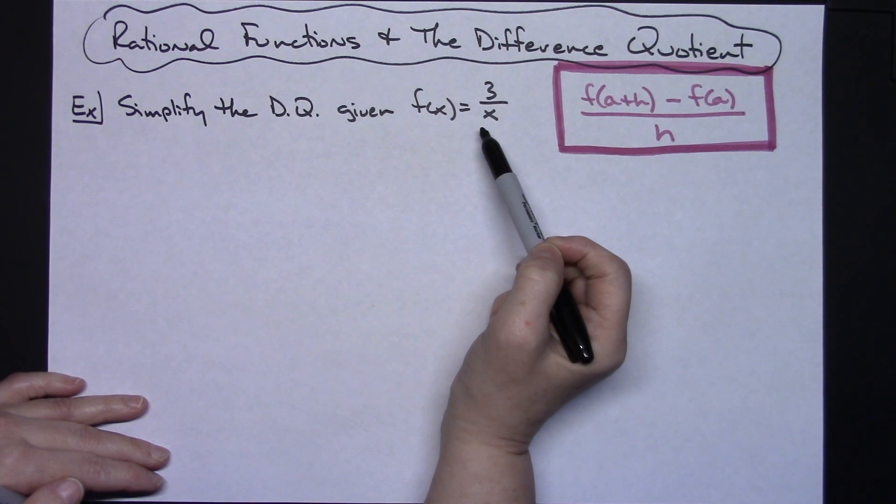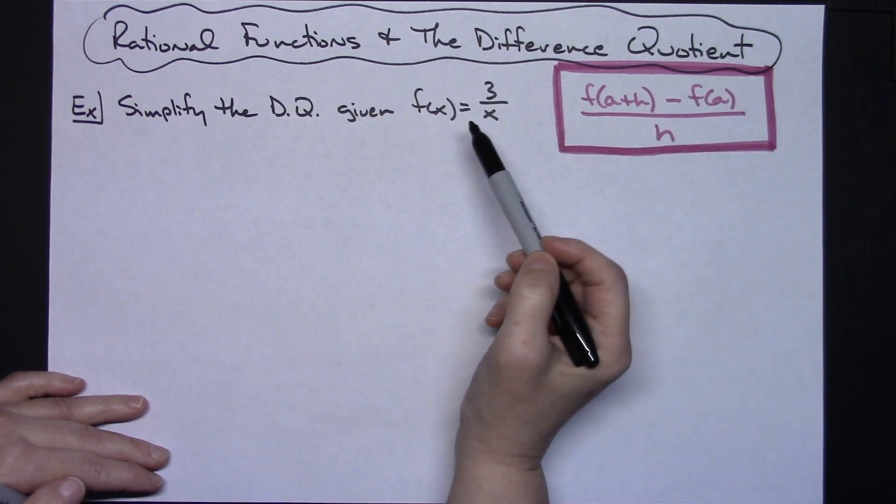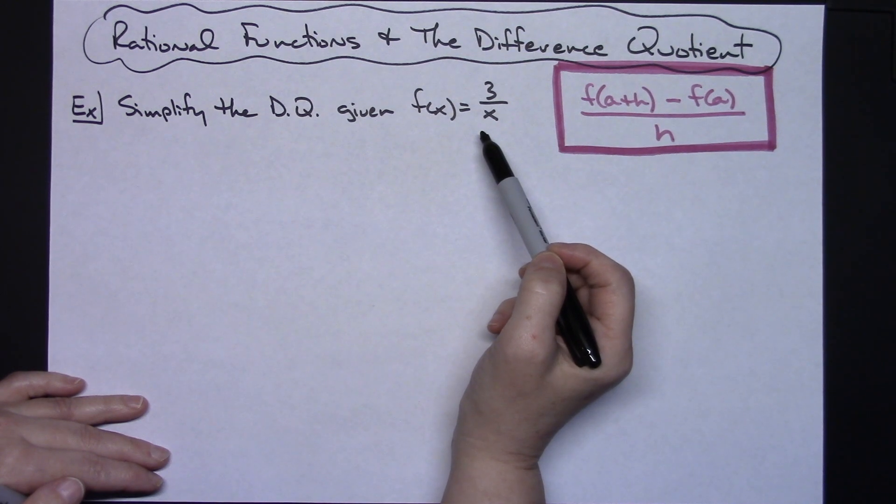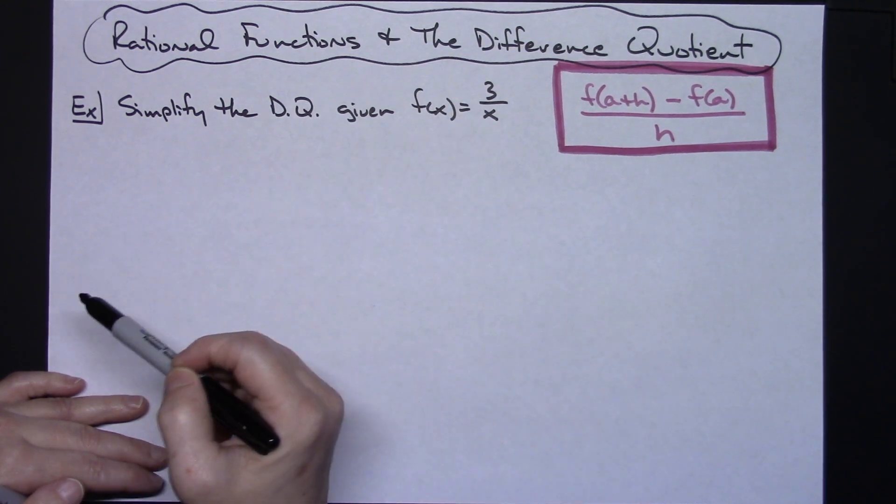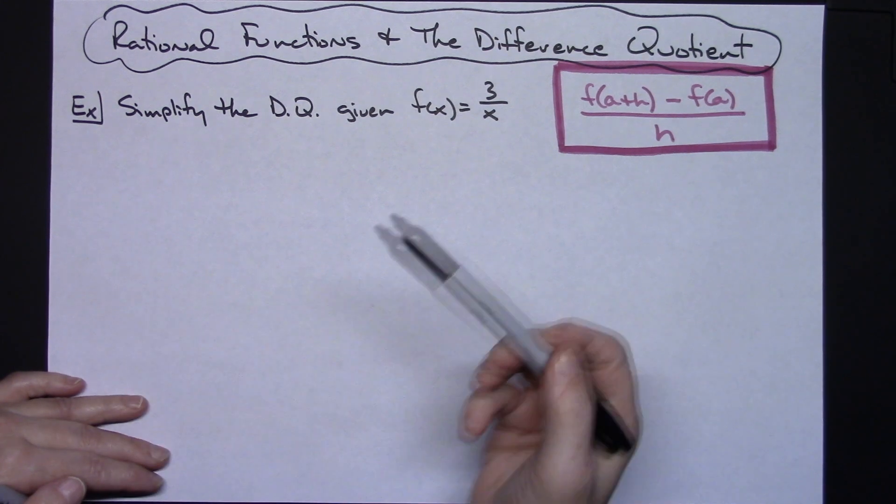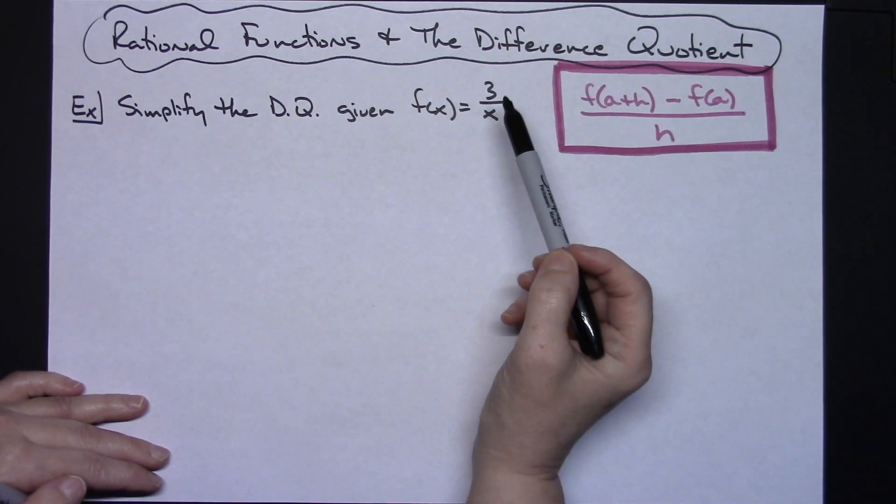Now because I do have a rational function, what's going to happen is it's going to create a complex rational expression and then you're going to have to simplify the complex rational expression, which is going to make the problem harder.